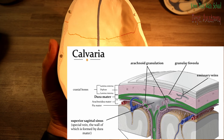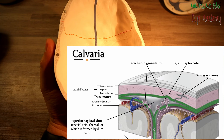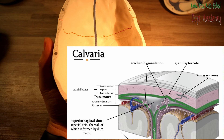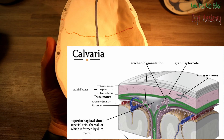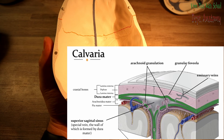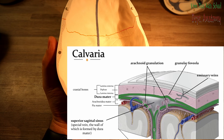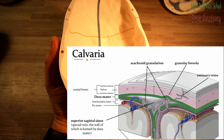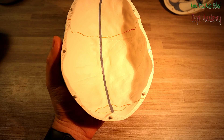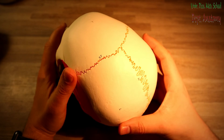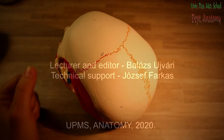Here you can see a schematic drawing about the layers of the skull, which you will learn about in the neuroanatomy semester with more details. The calvaria was quite straightforward — thank you for your attention.